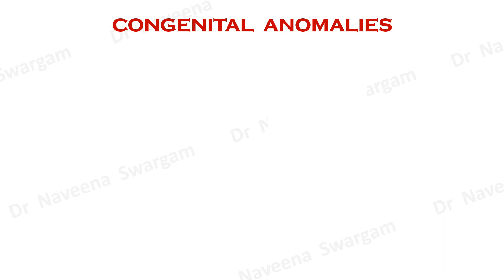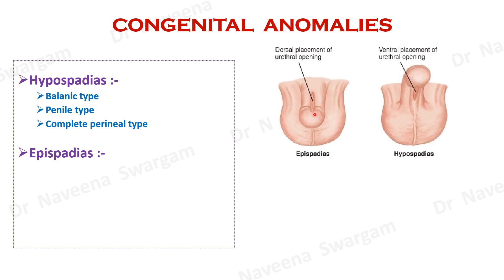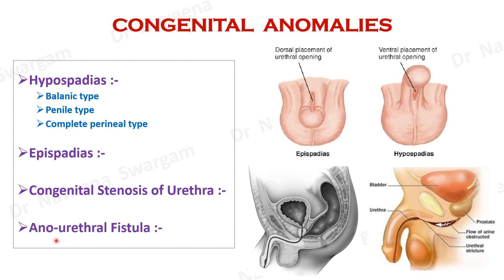Now let's learn a few congenital anomalies. Hypospadias is a condition in which the external urethral orifice is seen on the undersurface of the penis. It is classified into three types: balanic type, where the opening is at the base of the glans penis; penile type, where the opening is on the undersurface of the body of the penis; and complete perineal type, where the opening is within the perineum in the midline. Epispadias is where the external urethral orifice is seen on the dorsal surface of the body of the penis. Congenital stenosis of the urethra most commonly affects the membranous part of male urethra. Anourethral fistula is where the anal canal opens into the membranous part of male urethra, secondary to imperforate anus.